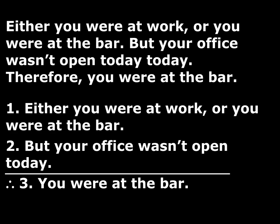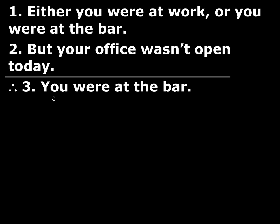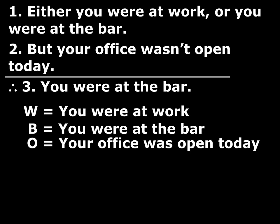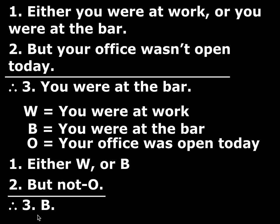This is what we've been doing so far this chapter — a lot of practice translating statements. I'm going to rewrite this up at the top. First I want to find what are the atomic statements involved in all of these, because I have to translate all of them. I need to find all of the atomic statements that appear anywhere in the premises or the conclusion, and there are three: W for 'you are at work,' B for 'you are at the bar,' and O for 'your office was open today.' Now I'm going to rewrite this argument, plugging in these letters, and I get: either W or B, but not O, therefore B.